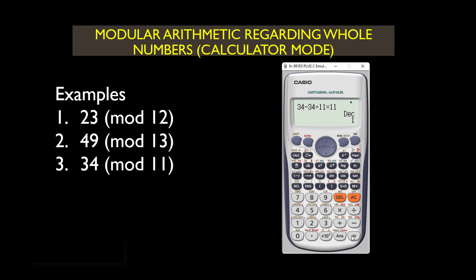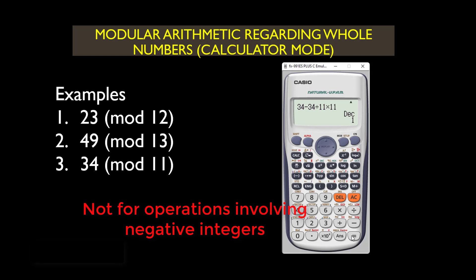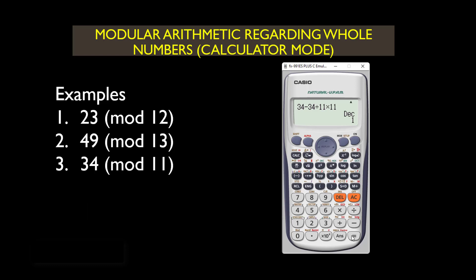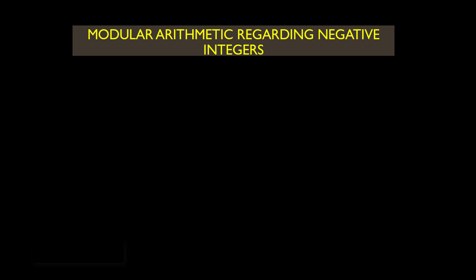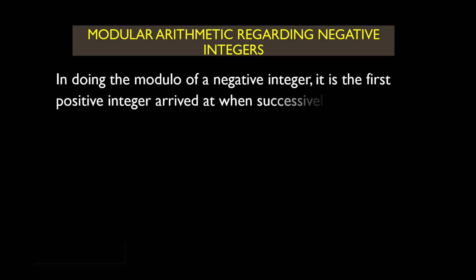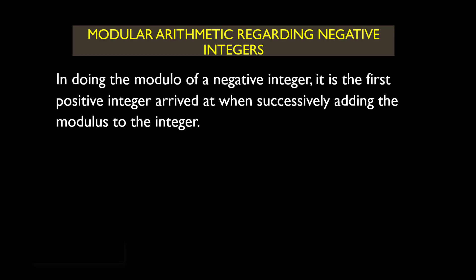There is another trick when you are dealing with negative integers. Do not use the previous method to perform modular arithmetic involving negative integers. For negative integers, the modular result is the first positive integer arrived at when successively adding the modulus to the integer. That first positive integer becomes your answer.